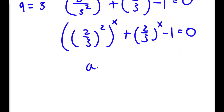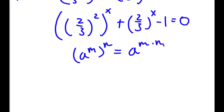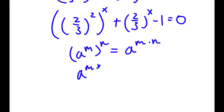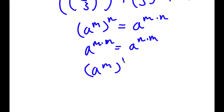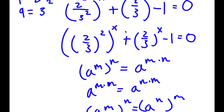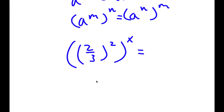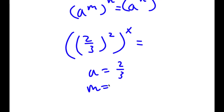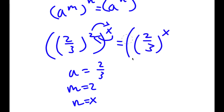Now remember, if I have something in the form a to the power of m over b to the power of m, this is equal to a over b to the power of m. So 2 squared over 3 squared equals 2 over 3 squared, to the power of x. If I have something in the form a to the power of m to the power of n, this equals a to the power of m times n. Since m and n are interchangeable, a to the power of m to the power of n is the same as a to the power of n to the power of m. So I have 2 over 3 to the power of 2 to the power of x, which I can rewrite as 2 over 3 to the power of x squared.